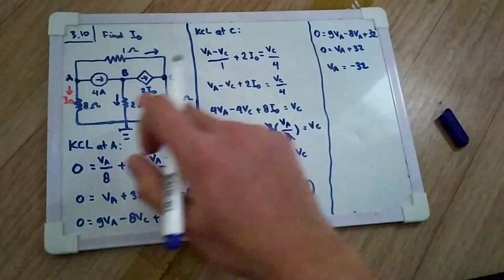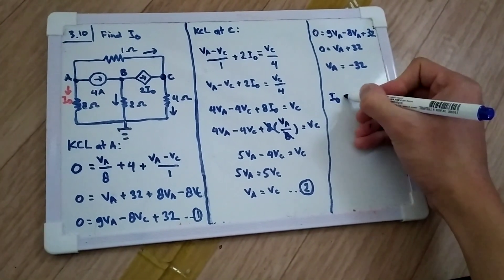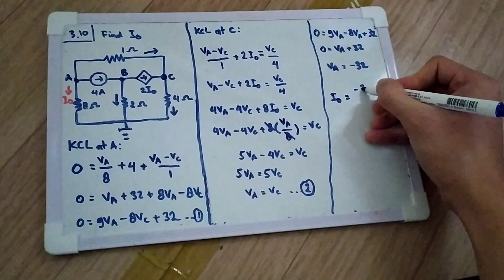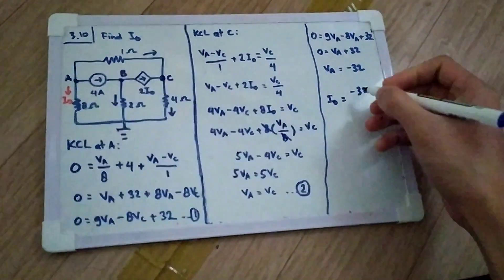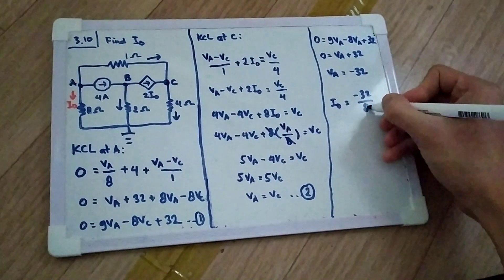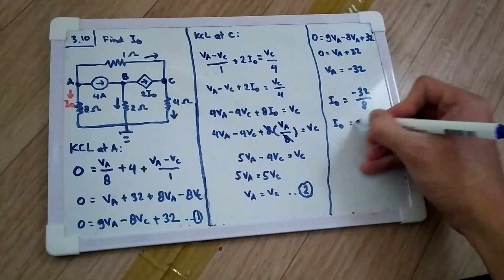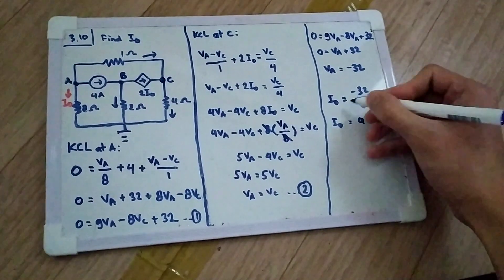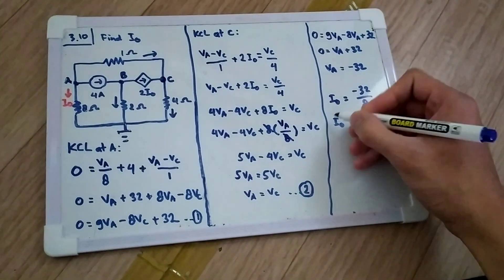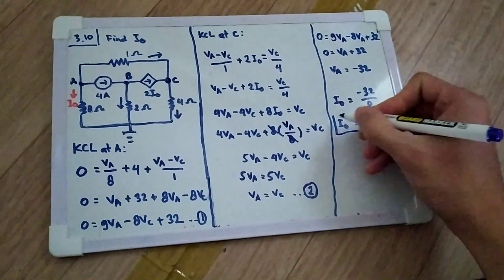VA is not what we are looking for — we want I0. So I0 equals VA divided by the resistor of 8, which gives I0 equals minus 32 divided by 8, and therefore I0 equals minus 4. This is our final answer.